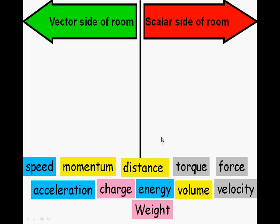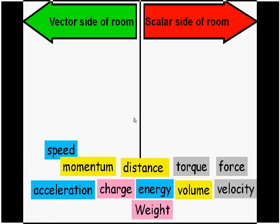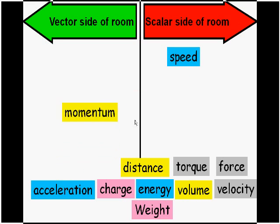OK, so hopefully you've paused the video and had a look at this. I'll go through the answers now. OK, scalar side: speed. Momentum is a vector. Distance is a scalar, whereas displacement is a vector.